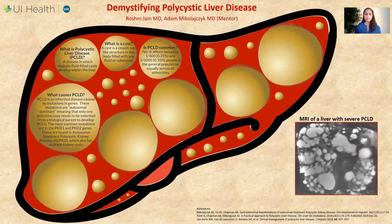Polycystic liver disease is an inherited disease caused by mutations in genes. Genes are made up of DNA and comprise the blueprints for our bodies. Mutations are abnormalities within those genes. In polycystic liver disease, the mutations are autosomal dominant, meaning that only one defective copy, as opposed to two, needs to be inherited from a biological parent to develop the disease.